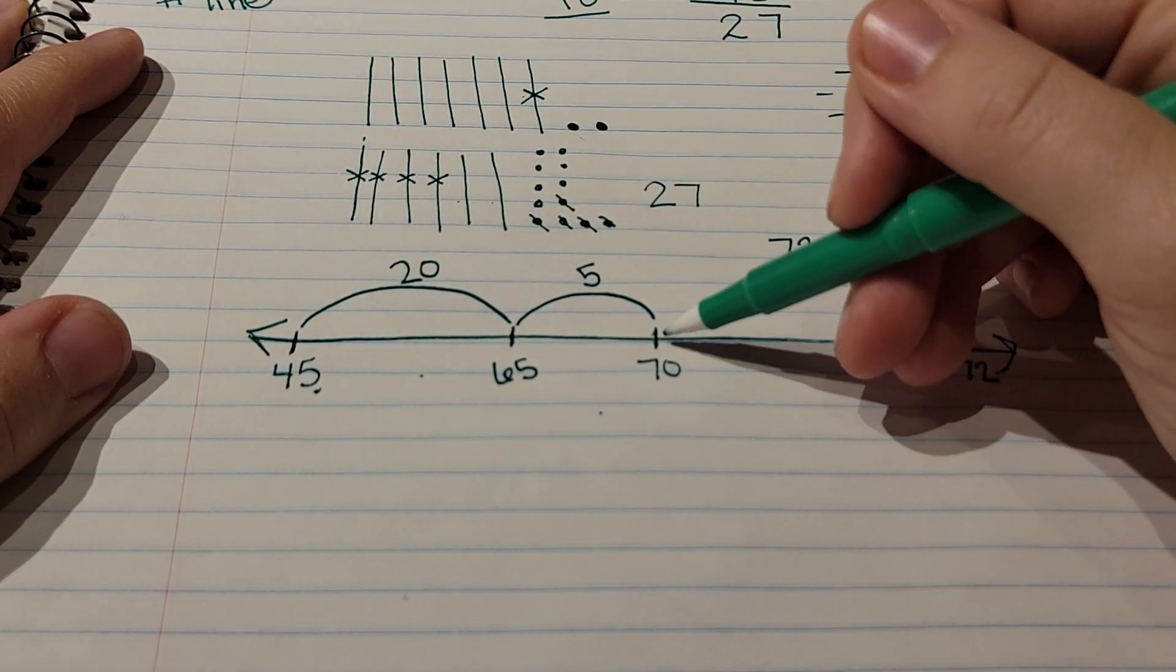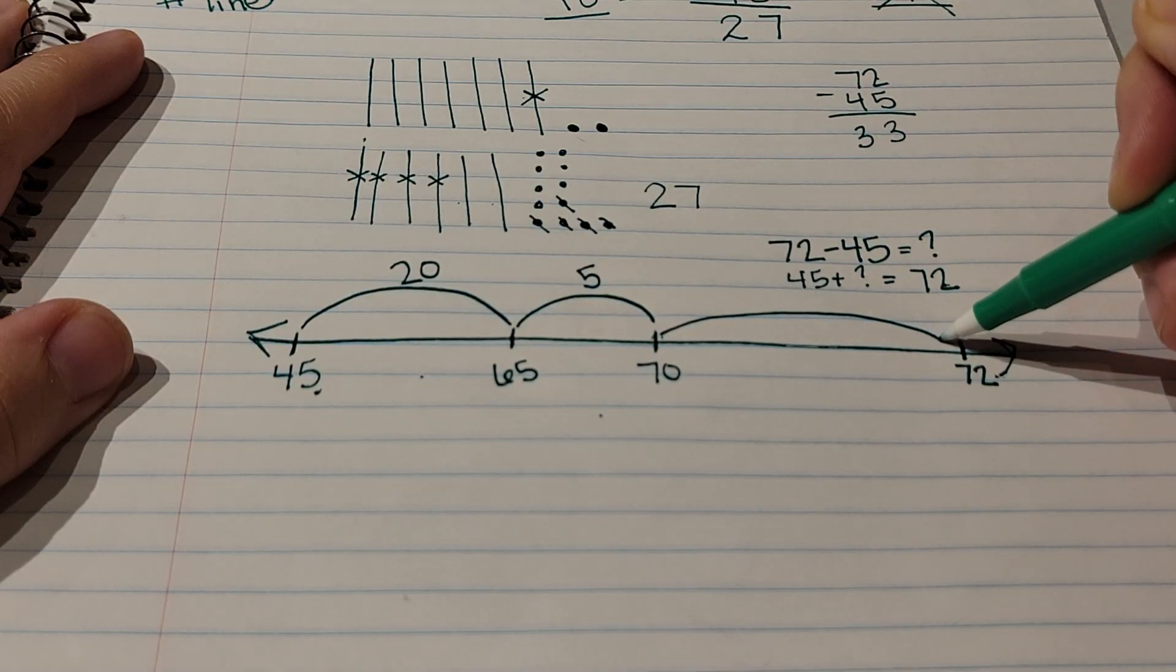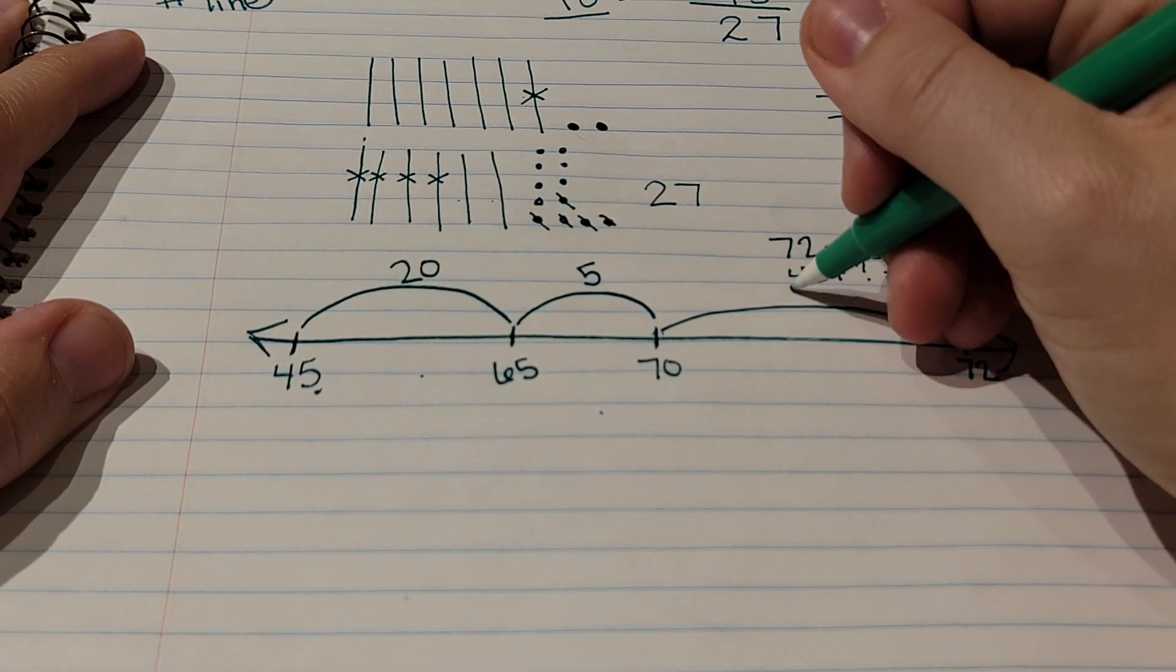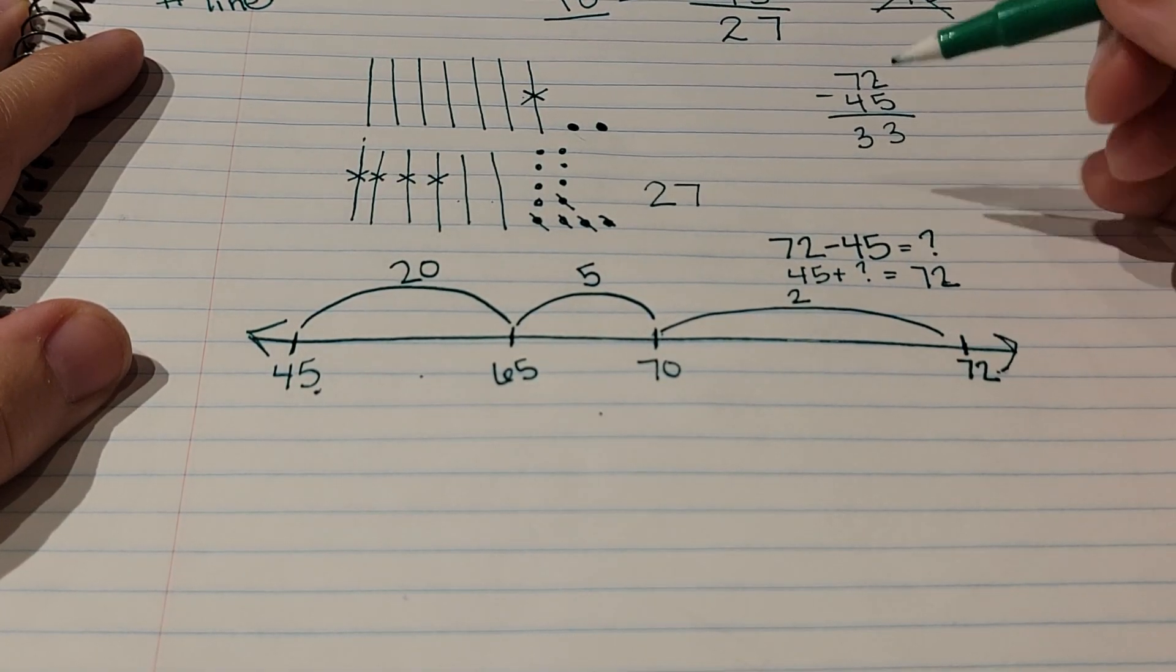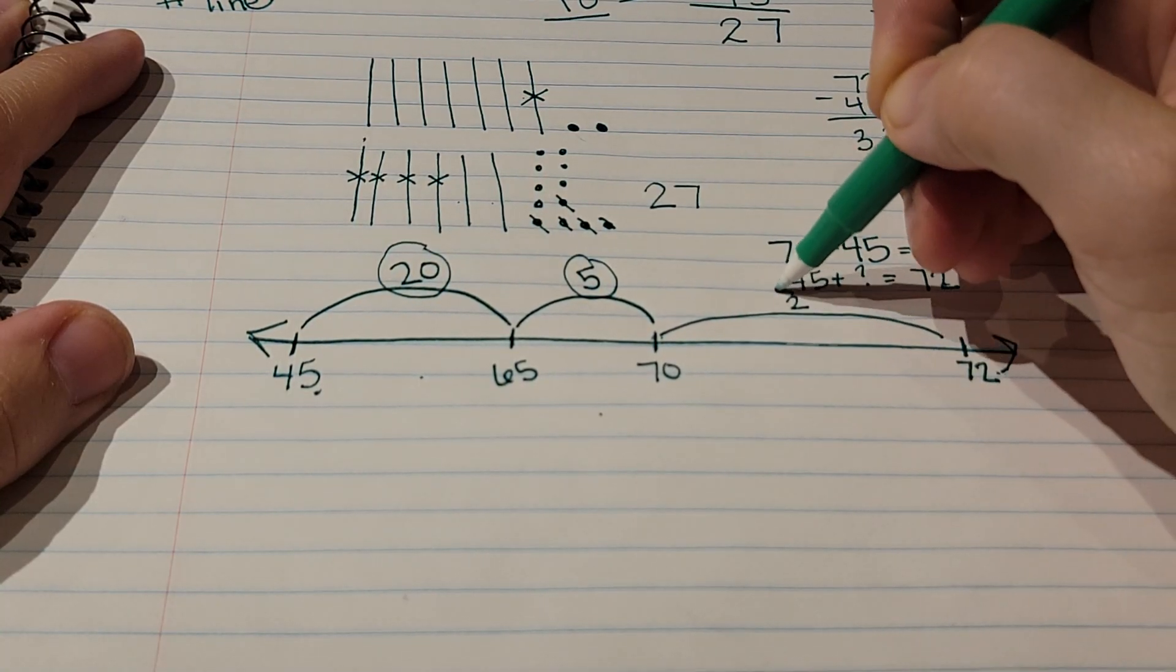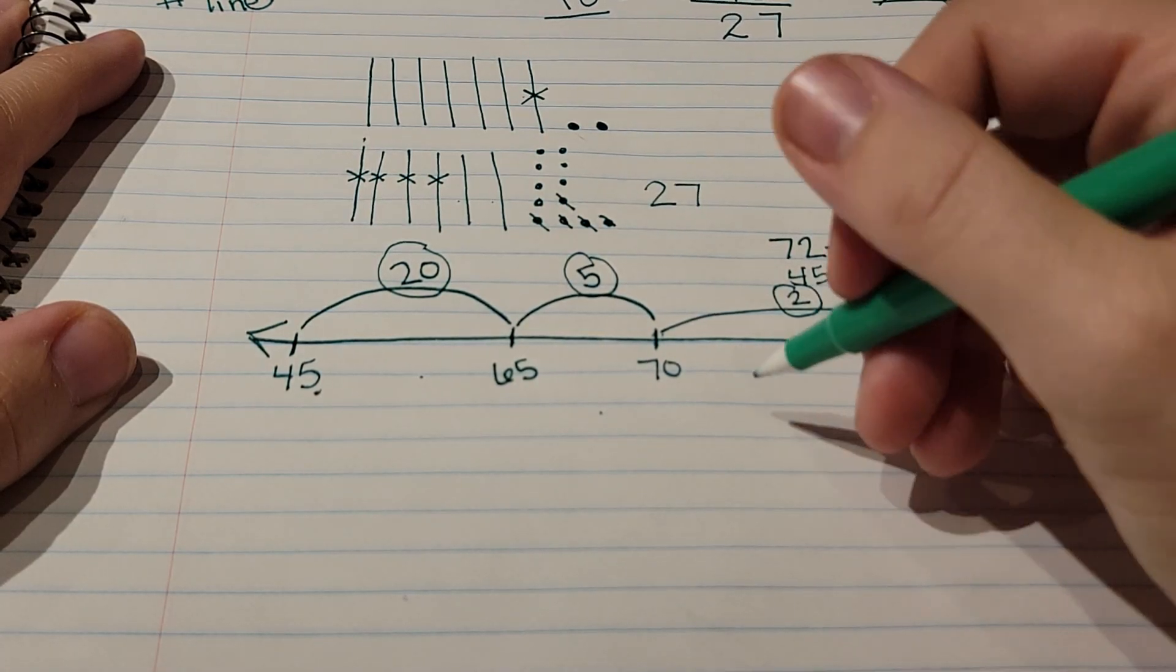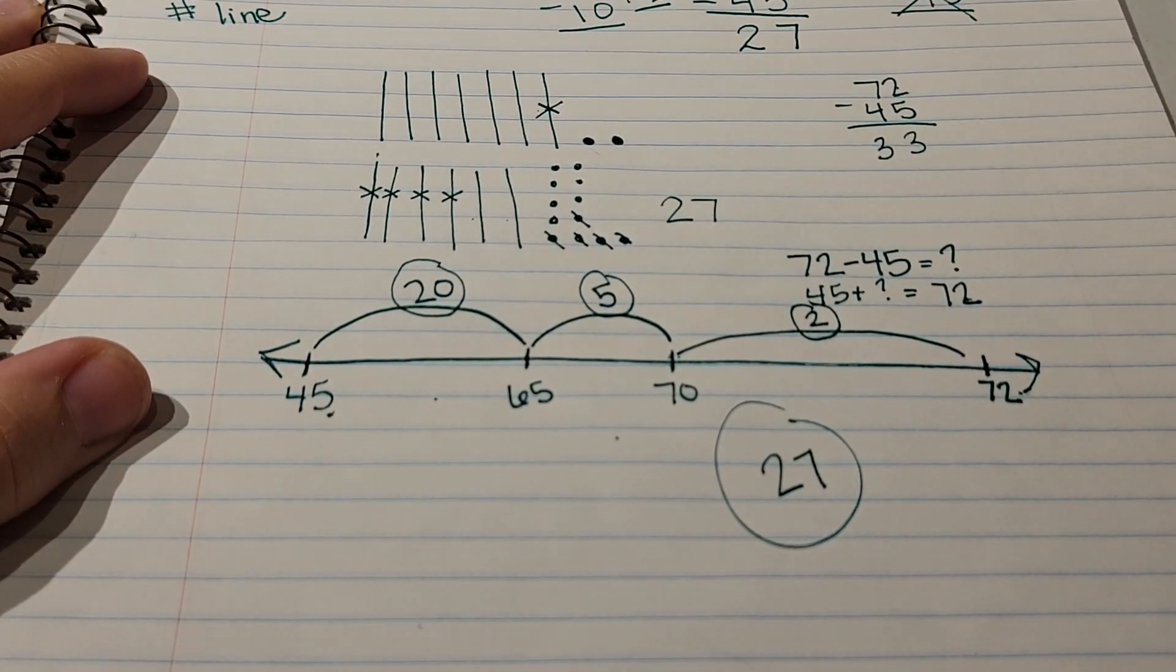And then I kind of drew this really long, oh well. And then I have to figure out how many jumps from 70 to 72, which is 2. And then the way you find your answer is by counting and adding all of your hops together. So 20 plus 5 plus 2 equals 27.